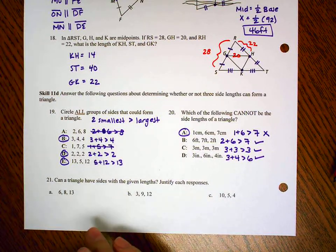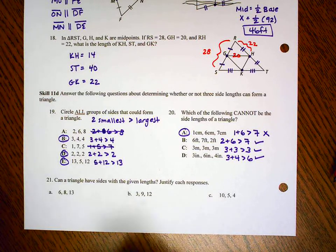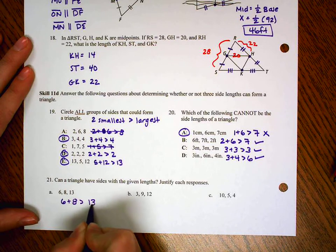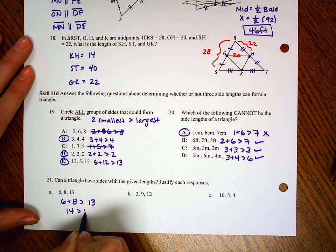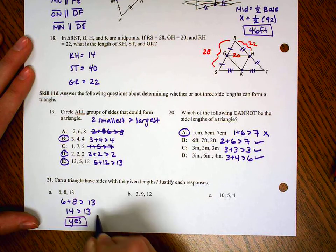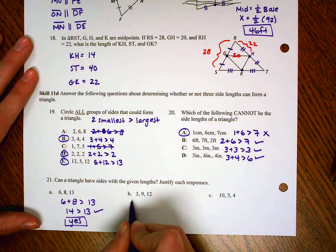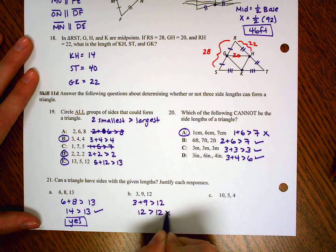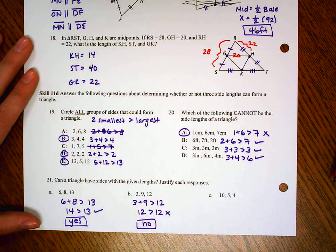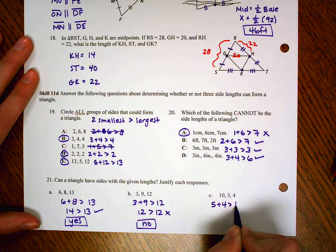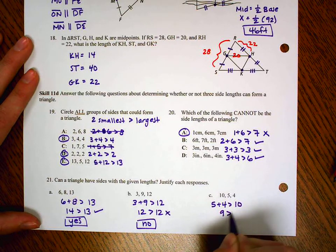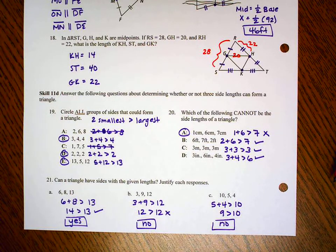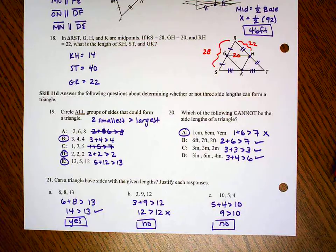We're going to just do it a couple more times, but we're just going to make sure we show our work. That's all we mean here by justify each response. So the two smaller ones are 6 plus 8. We want to see if 6 and 8 together are bigger than 13. Well yep, 14 is bigger than 13, so yes, this could be a triangle. Here we've got our two smaller ones. We want to see if they're bigger than 12. Well, 12 is not bigger than 12, so no, this cannot be a triangle. The two smaller ones are 5 and 4. Are they bigger than 10? Well nope, 9's not bigger than 10. No go. So remember, for these problems here, we're taking the two small ones. We want to make sure they're bigger than the longest.